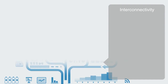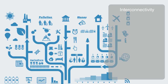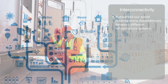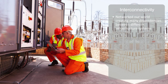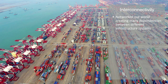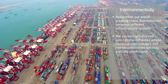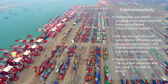Added to this, globalization and information technology have networked our world, creating many interdependencies between different infrastructure systems. For example, the Amsterdam electrical exchange was the first power exchange to be entirely conducted through the internet, making the electrical infrastructure dependent upon their IT infrastructure. Today, almost all of our products depend upon the workings of a globally distributed supply chain network. Thus, we are increasingly dependent upon global networks whose complex interlinkages and interdependencies we only partially understand. With every new shock to the system, like the financial crisis of 2008, we become more aware of these global networks and the need to properly model and analyze them.